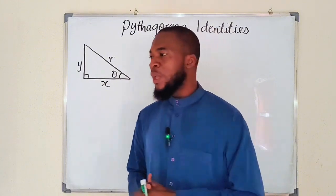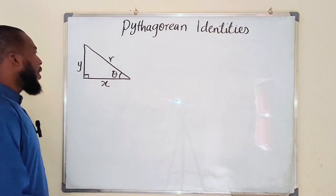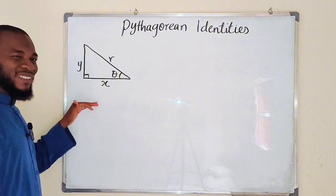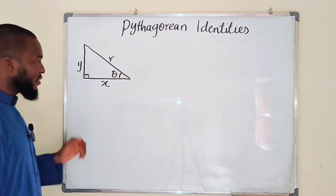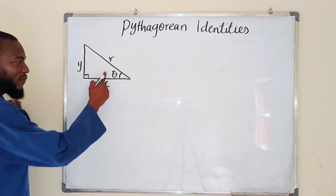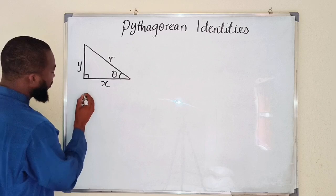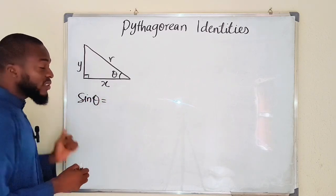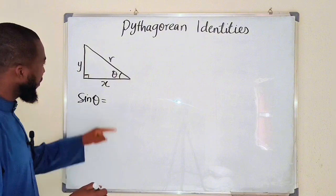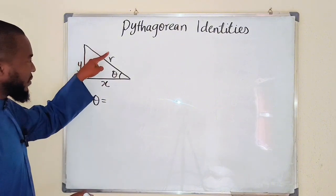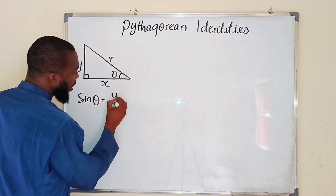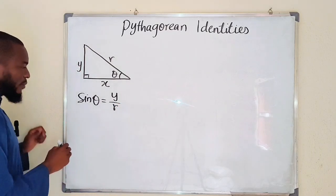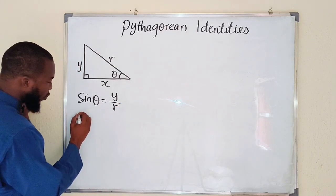Let's get started. This is a right-angle triangle. We are going to write down all the six trigonometric ratios, starting with sine of angle theta. Sine theta — remember it is opposite divided by the hypotenuse. This is the opposite, this is the hypotenuse, so we have y divided by r. The reciprocal is cosecant.